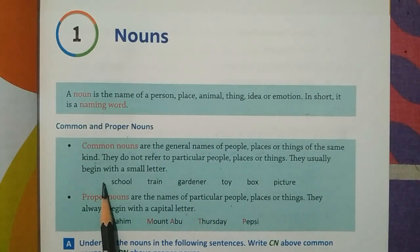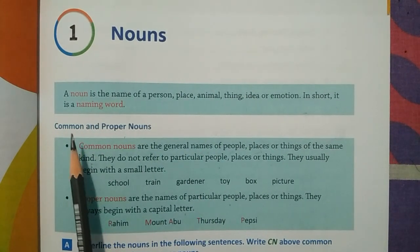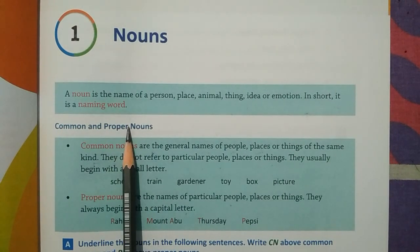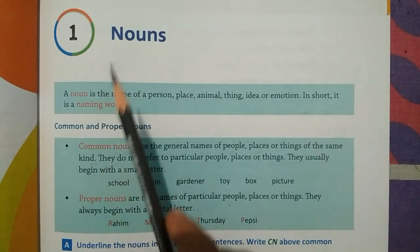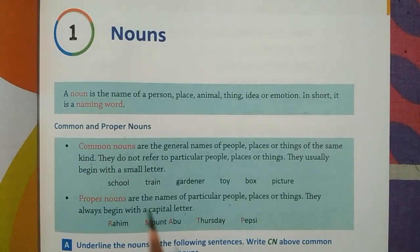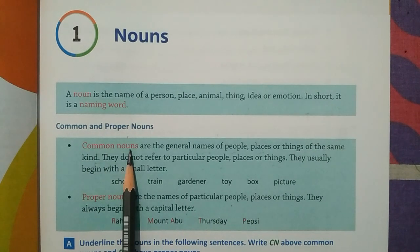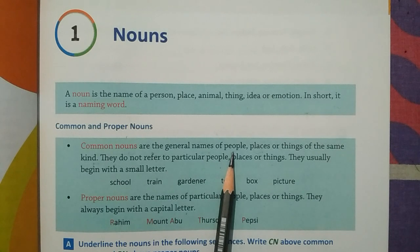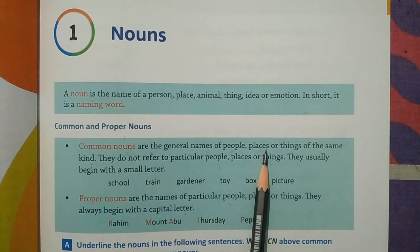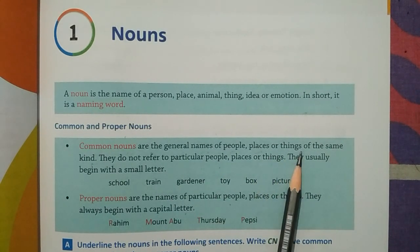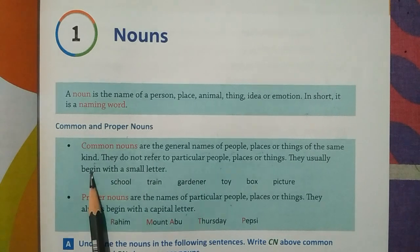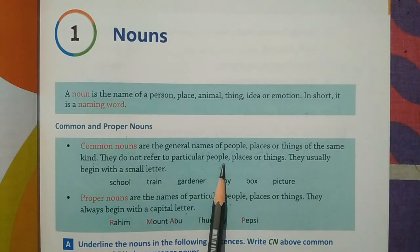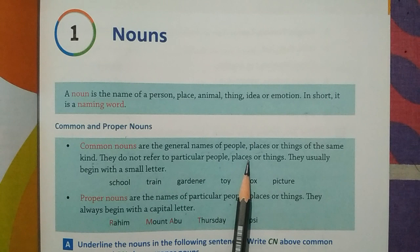In this chapter there are two nouns: Common and Proper. Common nouns are the general names of people, places or things of the same kind. They do not refer to any particular people, places or things.